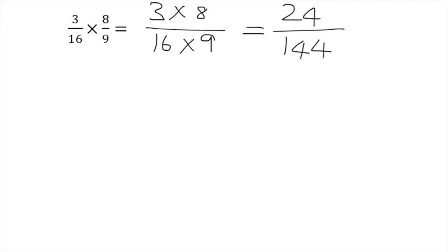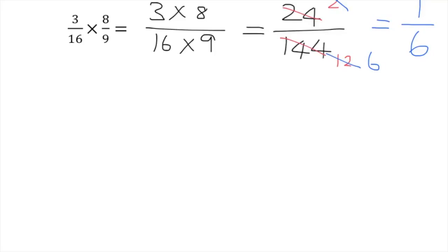We like to write our fraction in simplest form, so we've got to see if we can divide anything into the top and the bottom. 12 will go into 144 and also into 24 — 12 goes into 144 twelve times, and 12 goes into 24 twice, giving 2 over 12. That's still not in simplest form, so dividing top and bottom by 2 gives a final answer of 1 over 6. Multiply top, multiply bottom, get your answer, and then simplify.